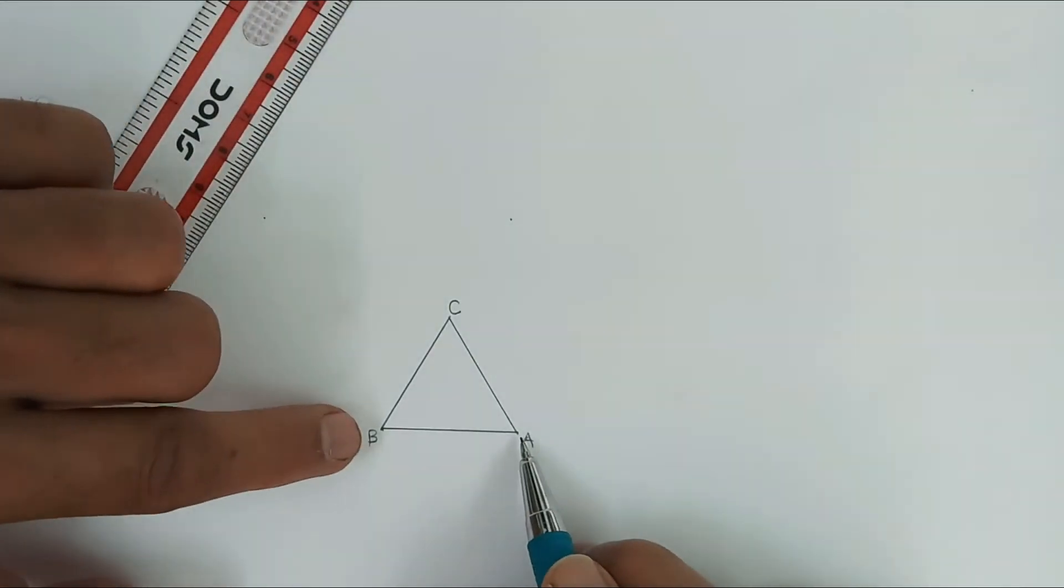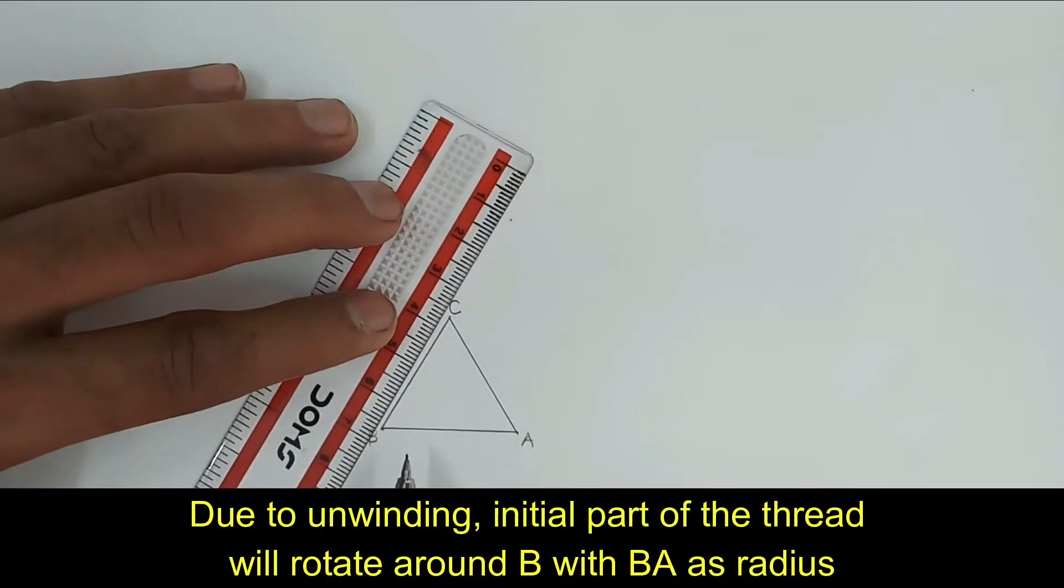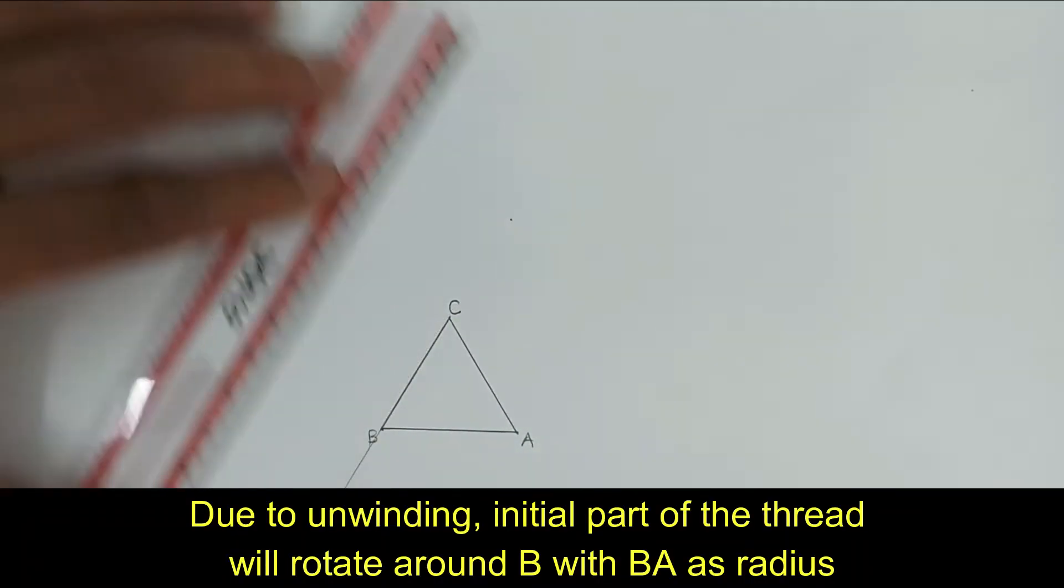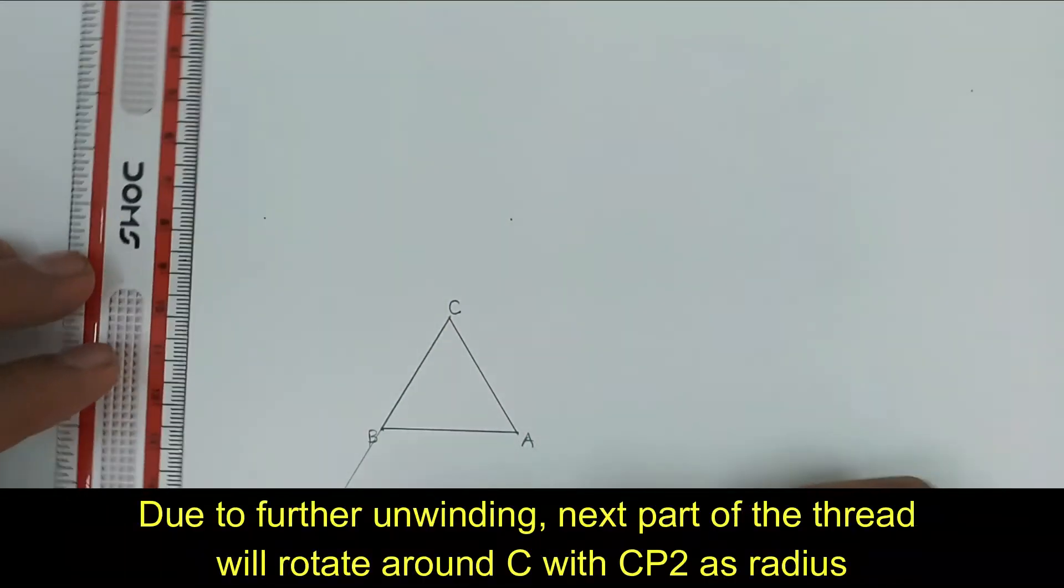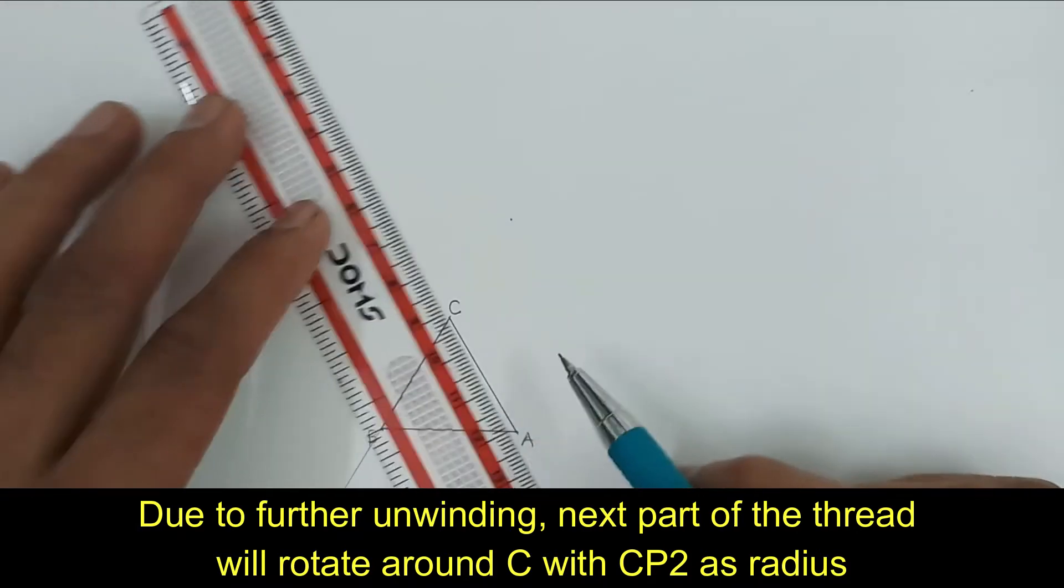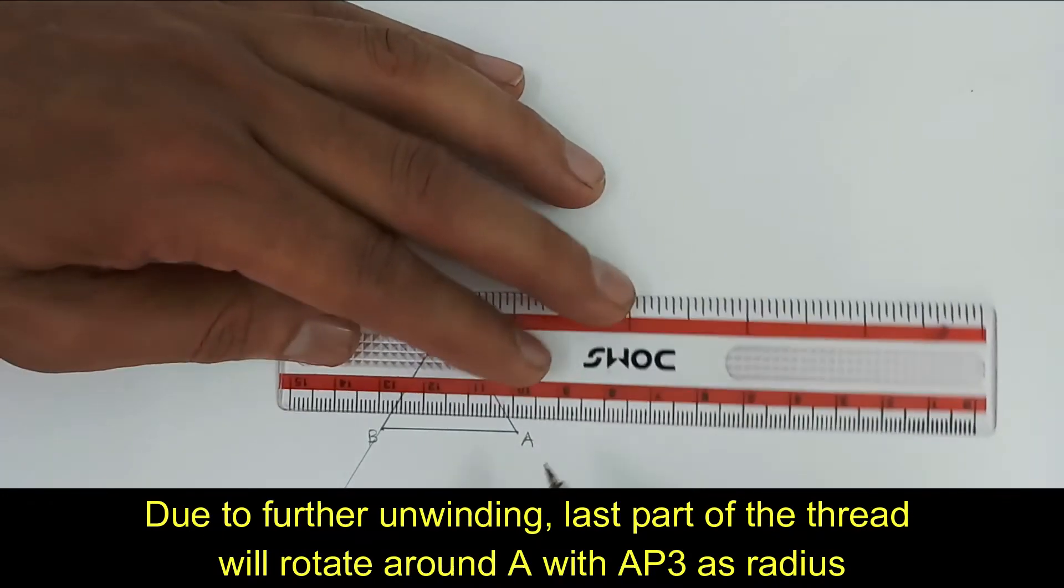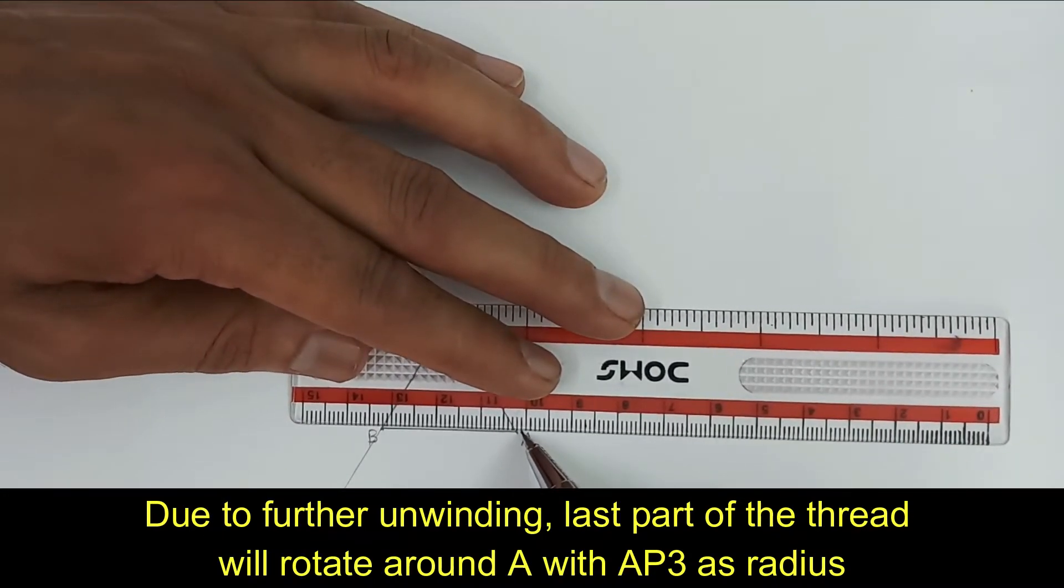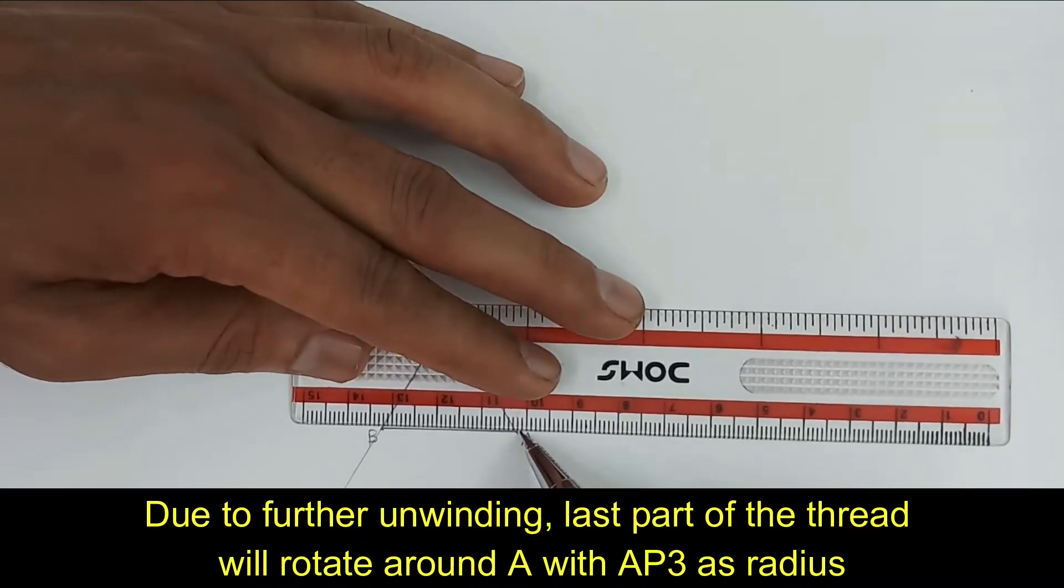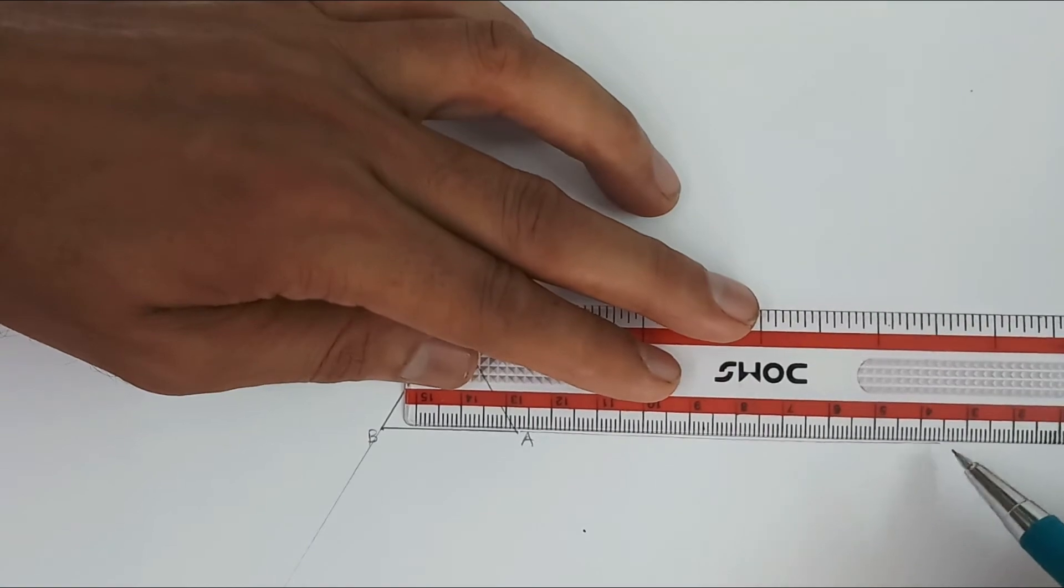So as I go on unwinding initially starting from point A, then the first part will rotate about B. That's why we have to first draw a line along BC. Then as I further go on winding this, it will rotate around C and that's why I have to draw a line along AC. As I further unwind that particular thread, then it will rotate around corner A and that's why I have to draw a line along AB.